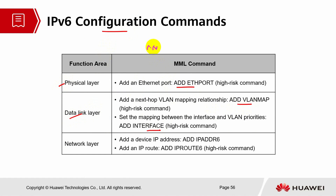At the data link layer we have VLAN MAP and INTERFACE — for IPv6 we are using the new model, no longer the old model. And for the device IP, we have already switched to IP ADDRESS 6 and IP ROOT 6, so instead of '4' earlier, we are now using '6'.